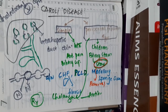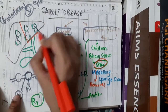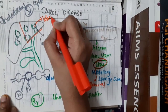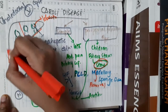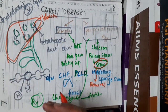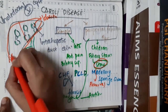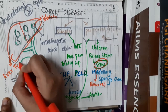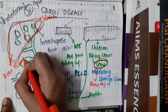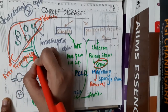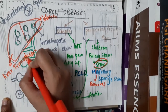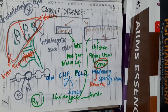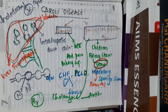If only a lobe is involved, then you can do a lobectomy. But if the whole liver is involved, then you will have to do liver transplantation. Overall, the best treatment option is liver transplantation. This is about Caroli's disease.